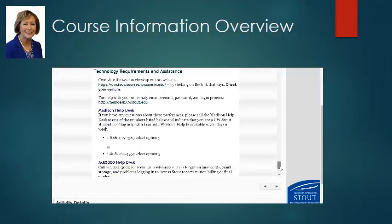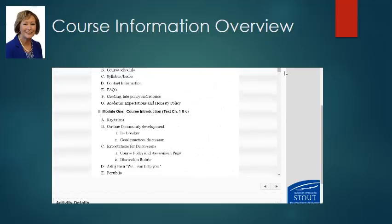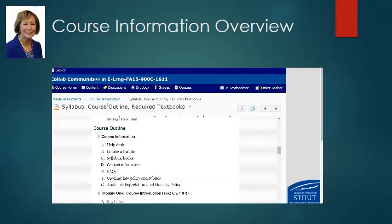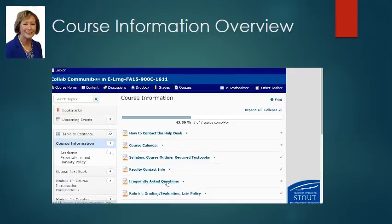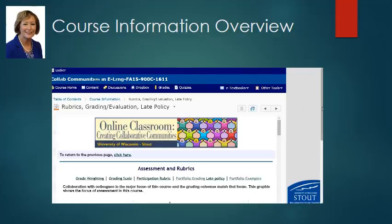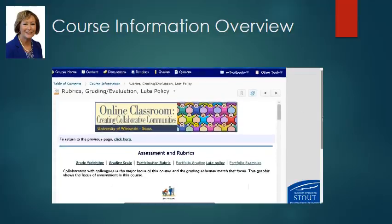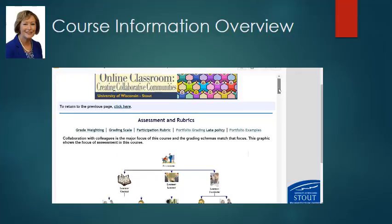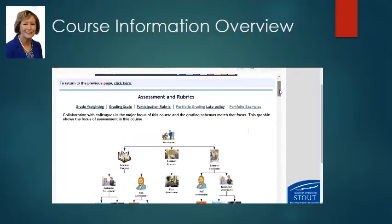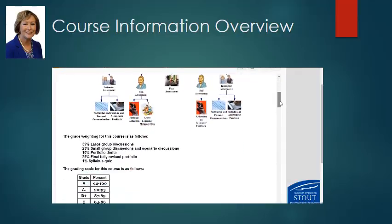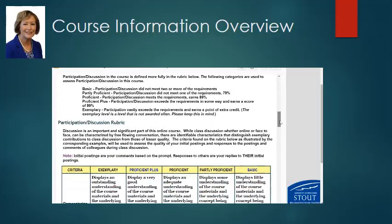There's some other information required by the university. Let's go back to a different part of course information. Don't hesitate to note my faculty contact information for offline use as well. Under this link in course information — rubrics, grading, evaluation, late policy — there's more about the expectations and the philosophy about how the course is graded. A little graphic illustrates what each of the levels means: basic, partly proficient, proficient, proficient plus, and exemplary.